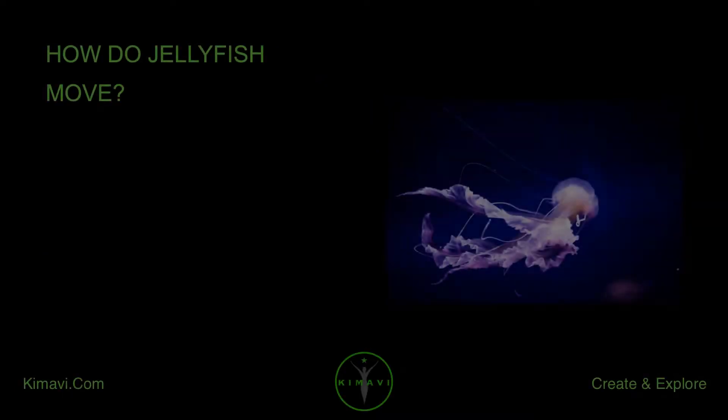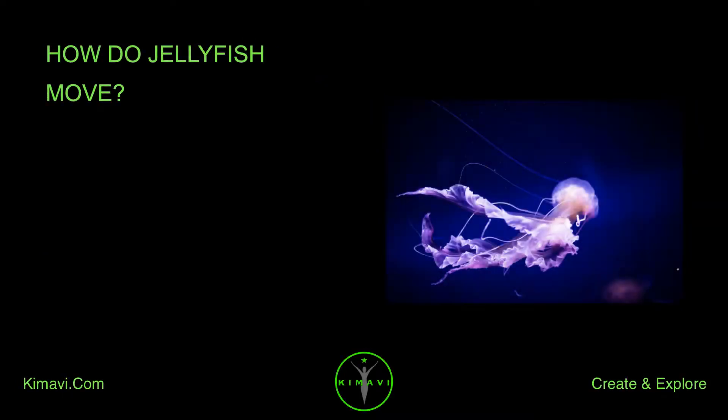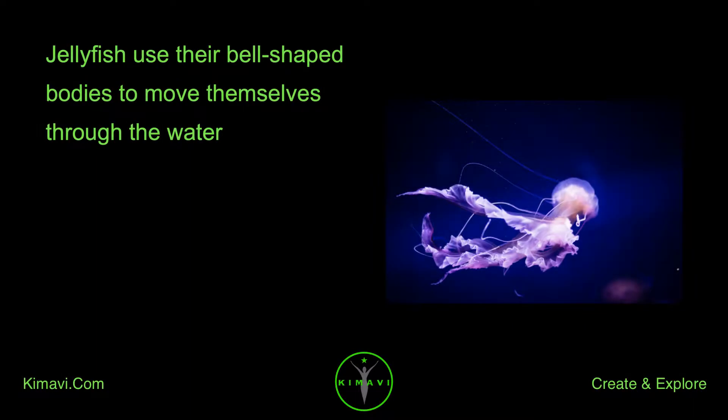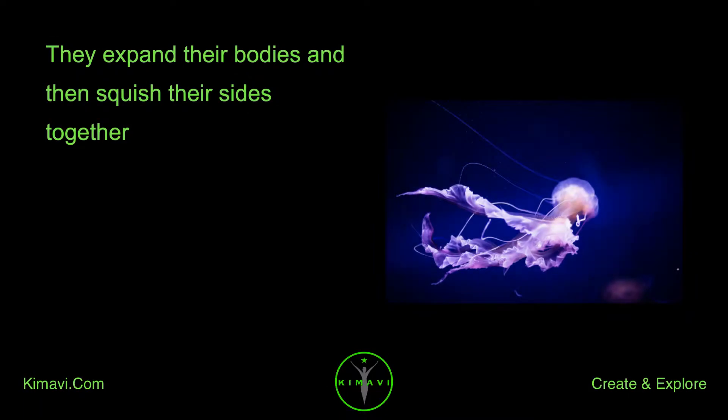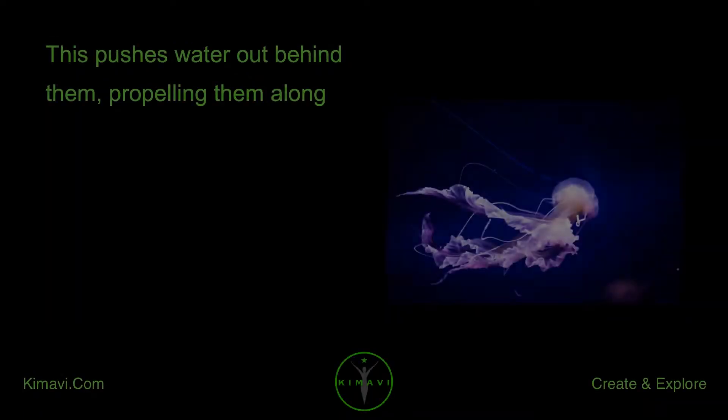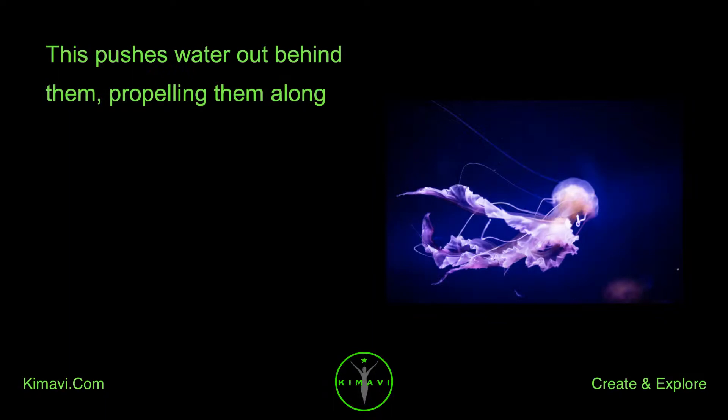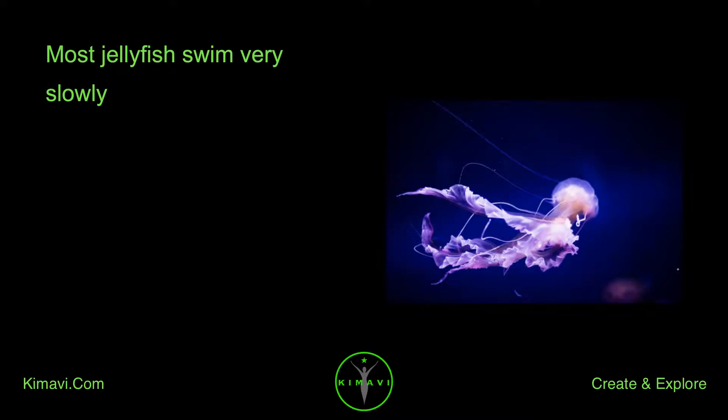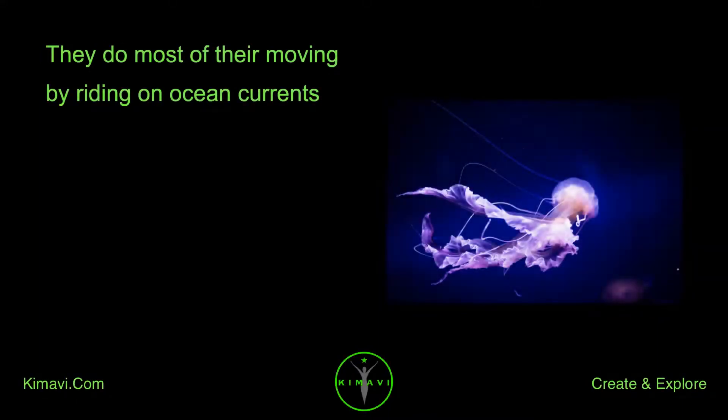How do jellyfish move? Jellyfish use their bell-shaped bodies to move themselves through the water. They expand their bodies and then squish their sides together. This pushes water out behind them, propelling them along. Most jellyfish swim very slowly. They do most of their moving by riding on ocean currents.